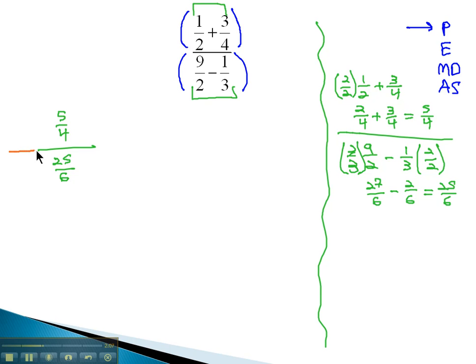For our next step, we'll remember that the fraction bar simply means division. We're really doing five-fourths divided by twenty-five-sixths. To divide fractions, we multiply by the reciprocal of the bottom fraction. So we have five-fourths times the reciprocal, six over twenty-five.